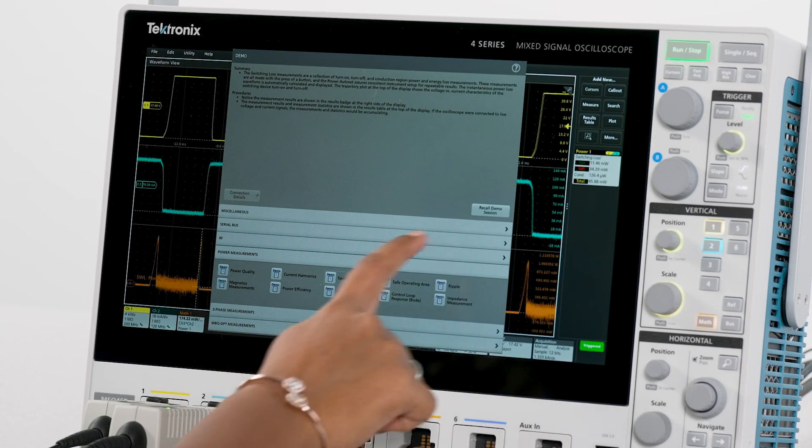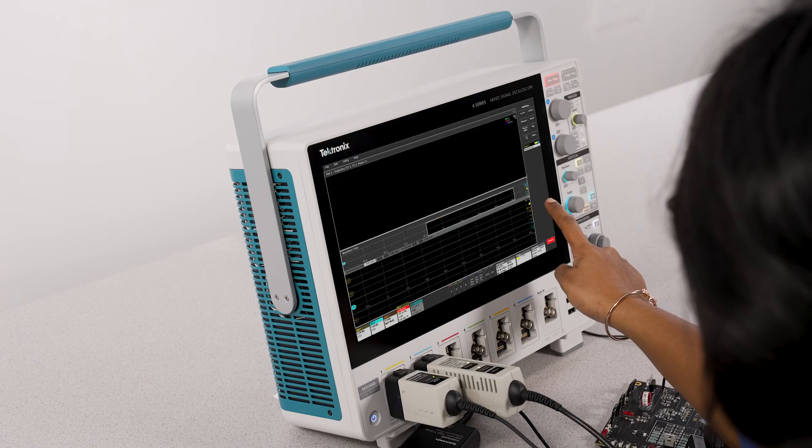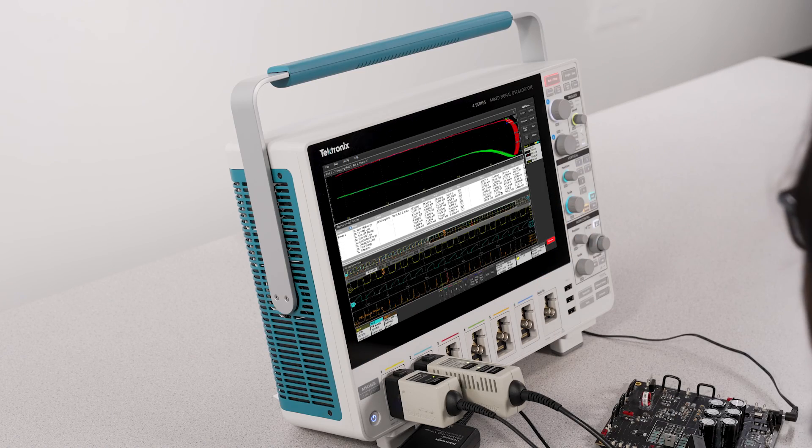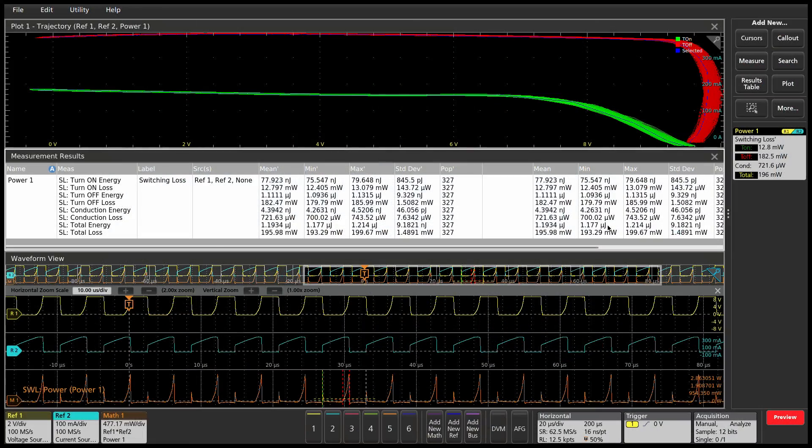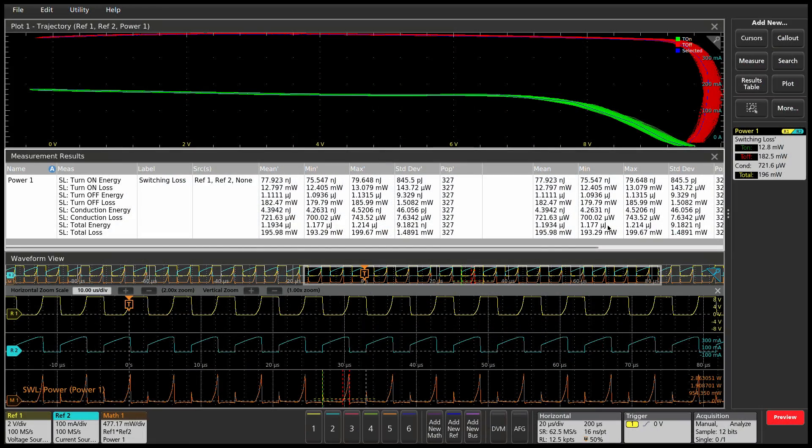To get an overview of the switching loss for all captured cycles, you can use the trajectory plot. It automatically plots the voltage across the switching versus current through the switch during turn-on and turn-off, letting you judge the range of switching loss for all cycles at a glance.